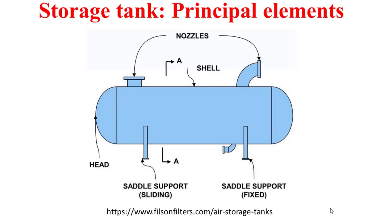The storage tank can be simply seen as a combination of some principal elements. These elements are the shell and the formed heads — here the shell and here the formed heads — and we also have nozzles, which can be carried out as a manhole, or inlet and outlet, or even a drain. We also have two saddle supports: one fixed and the other sliding.